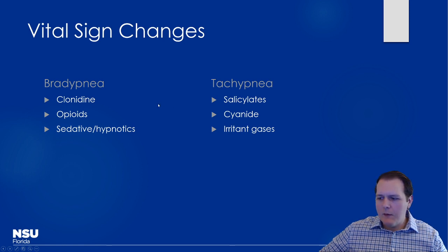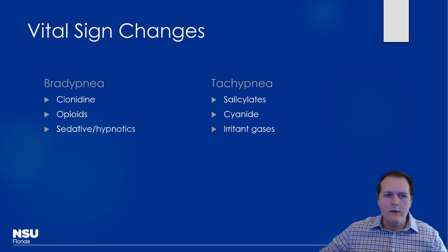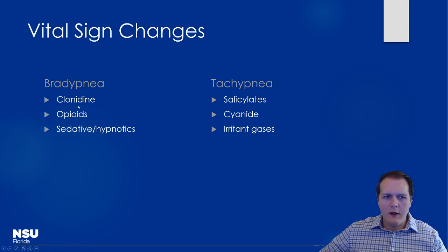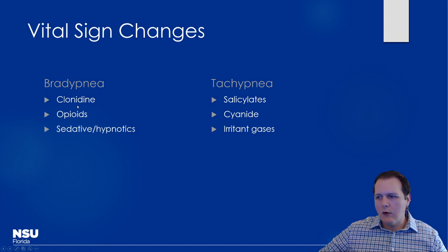Changes in respiratory rate can also help us out. Bradypnea and apnea are expected with sedative hypnotics — barbiturate exposure, large doses of benzos, or opioids. The classic triad of opioid exposure includes respiratory depression. Interestingly, clonidine can mimic opioids — patients present relatively sedate with shallow breathing, depressed blood pressure and heart rate. You can actually use naloxone on certain clonidine exposures and see improvement in mental status.